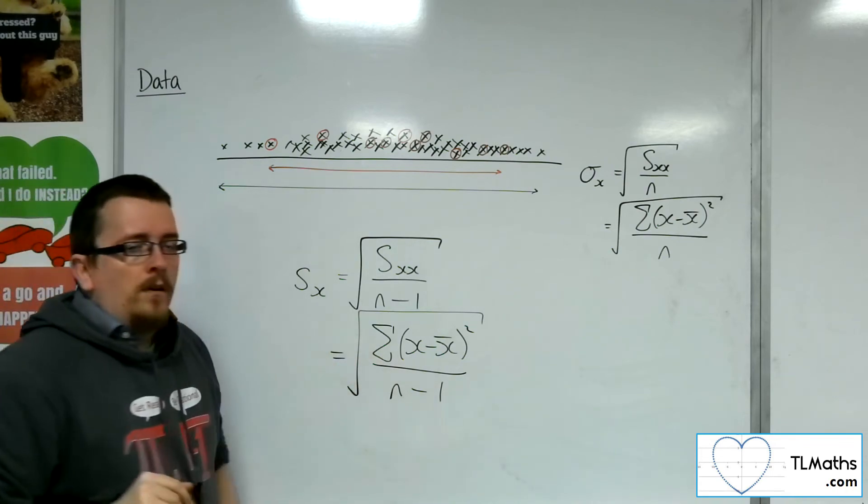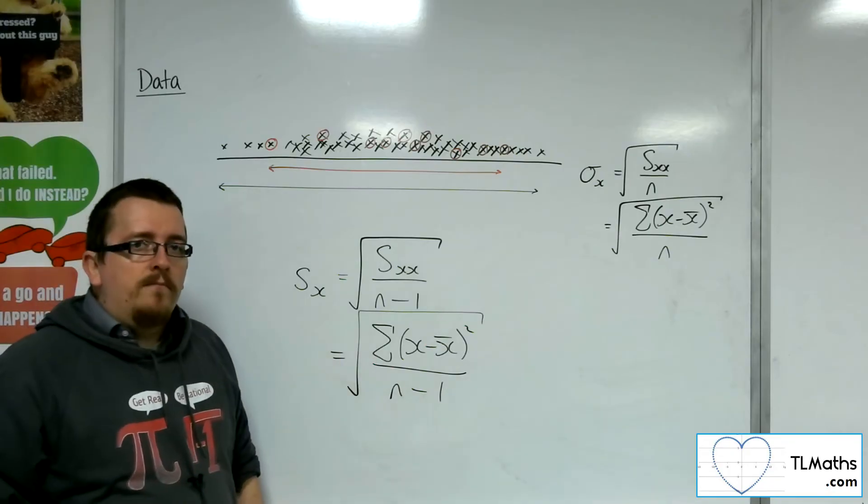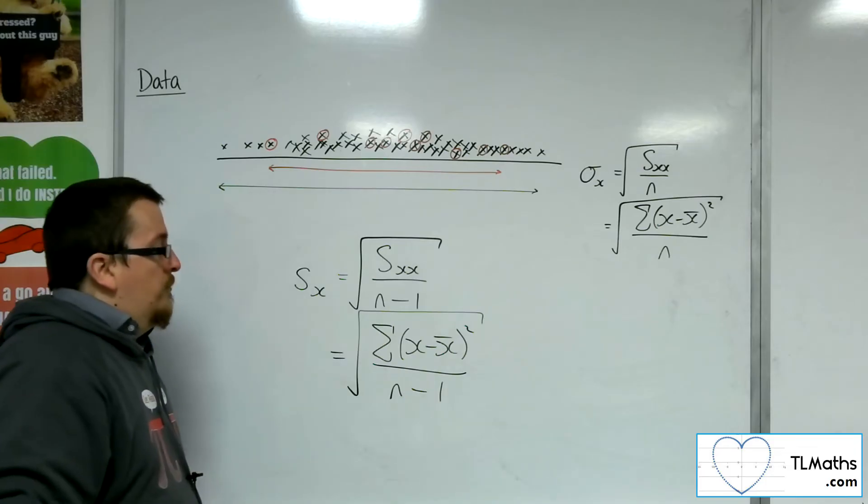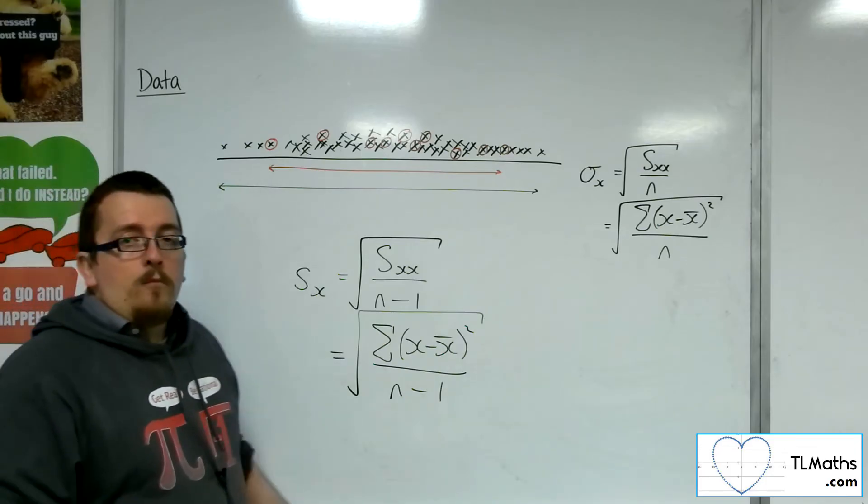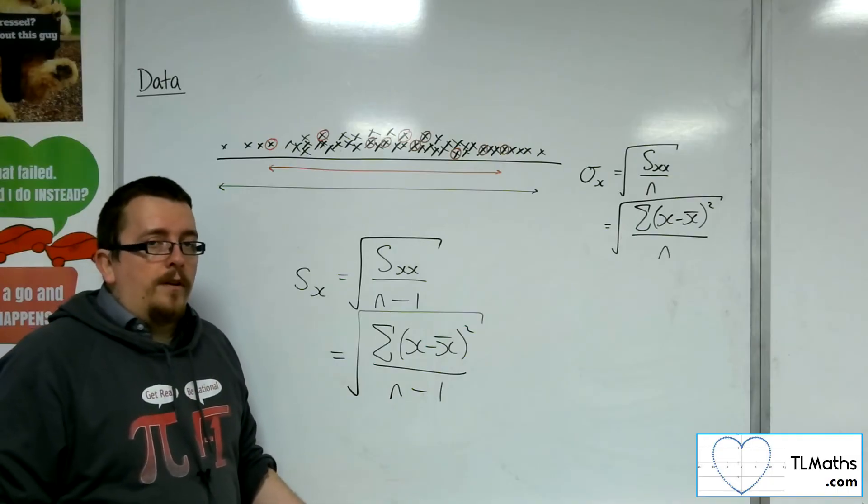So, we don't divide by n minus 0.999995, which might, in the grand scheme of things, be more accurate, but n minus 1 is easier to work with.